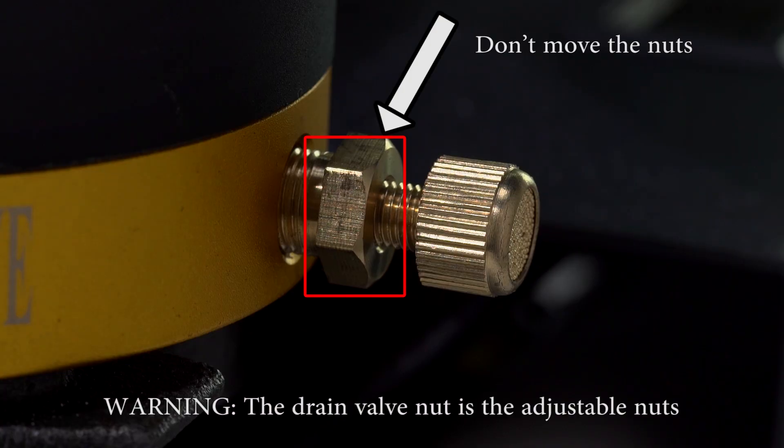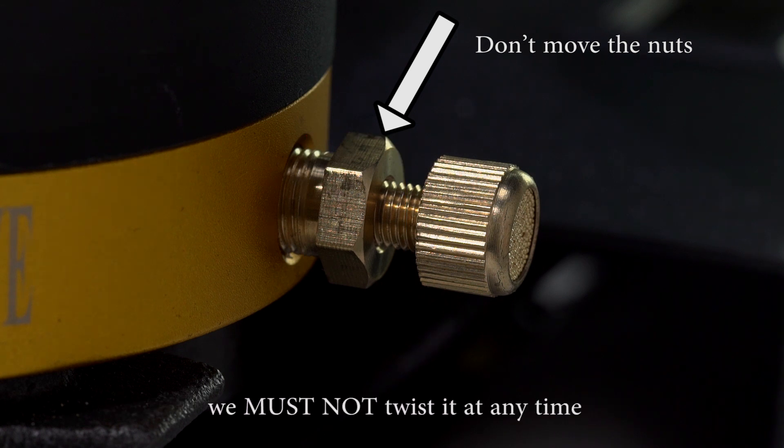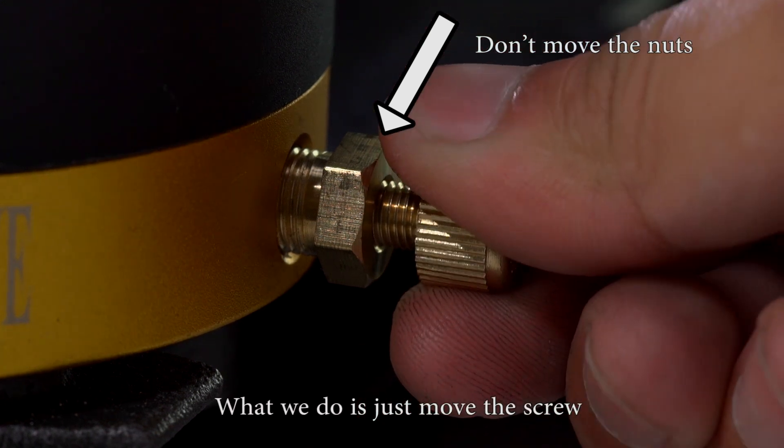Warning, the drain valve nut is the adjustable nut. We have already adjusted before shipping. We must not twist it at any time. What we do is just move the screw.